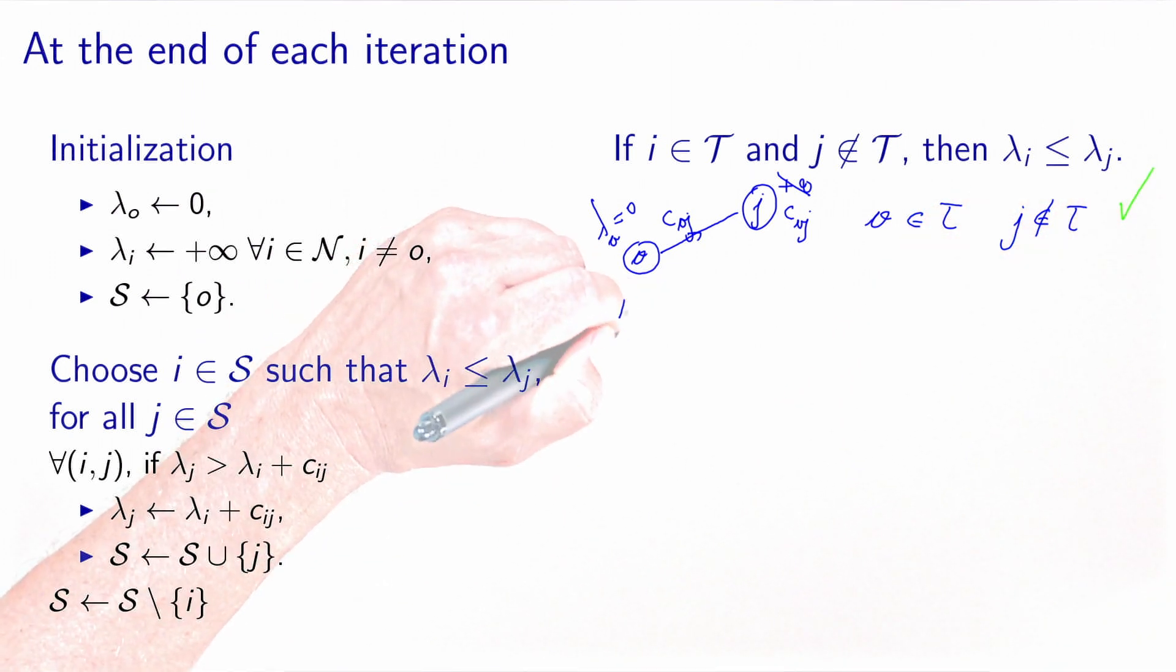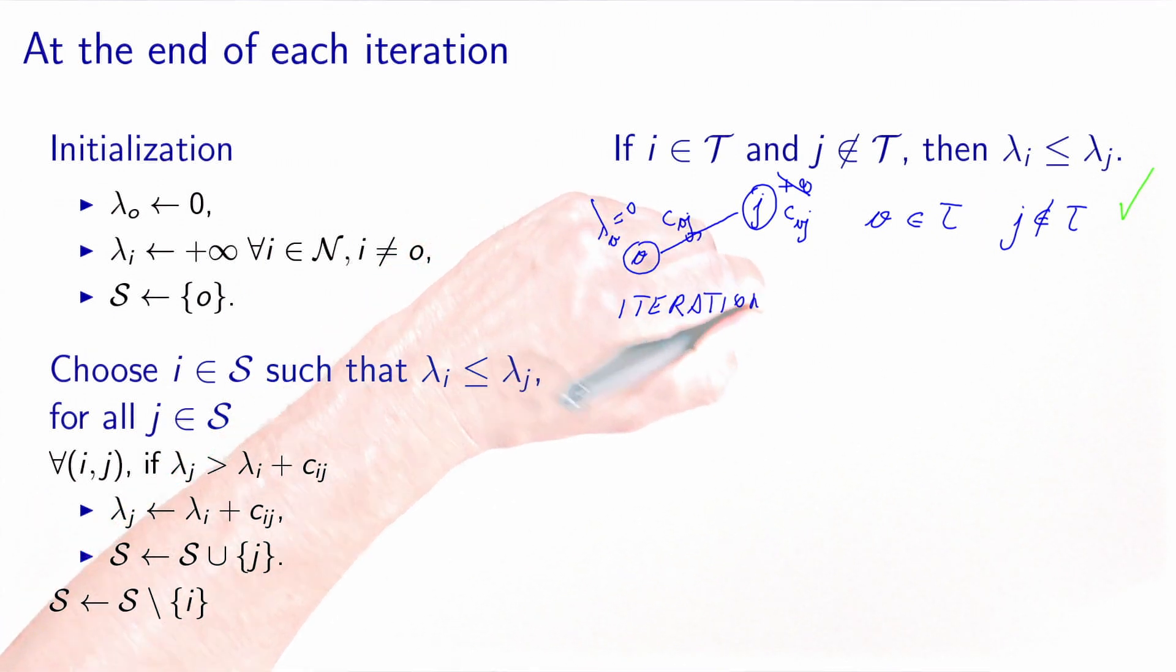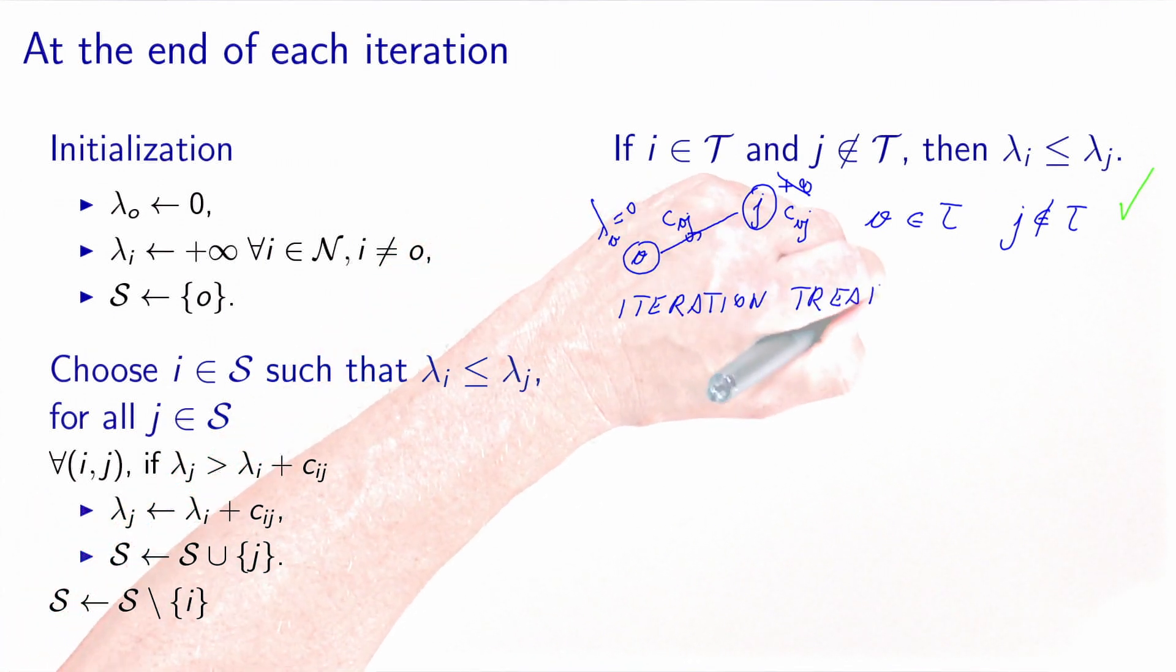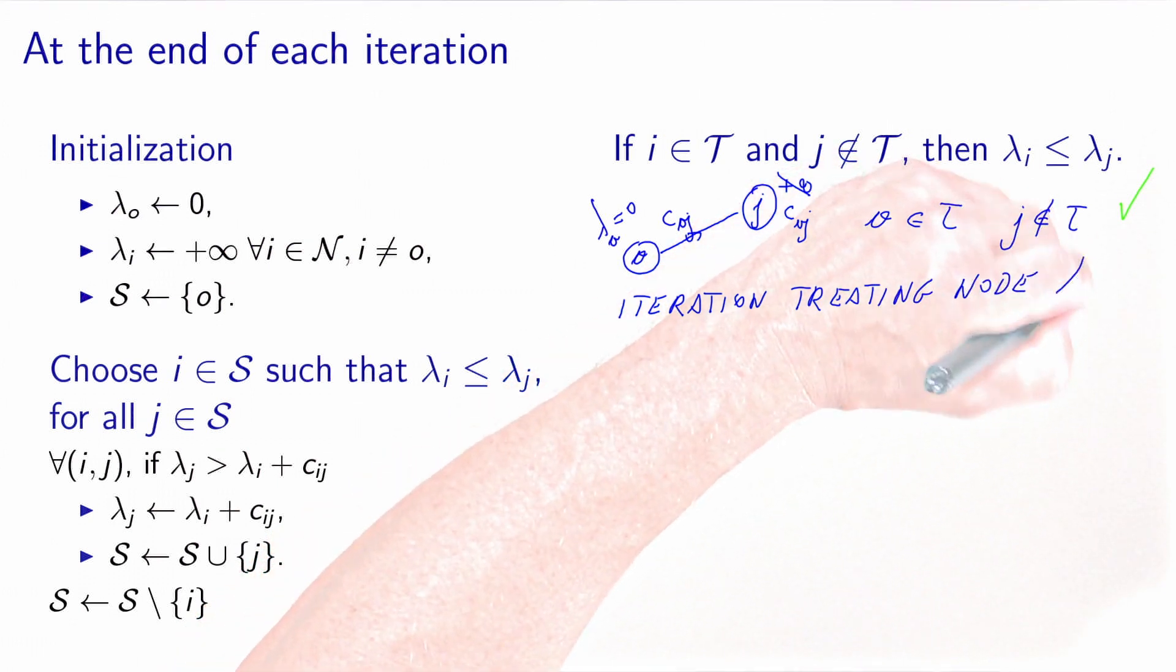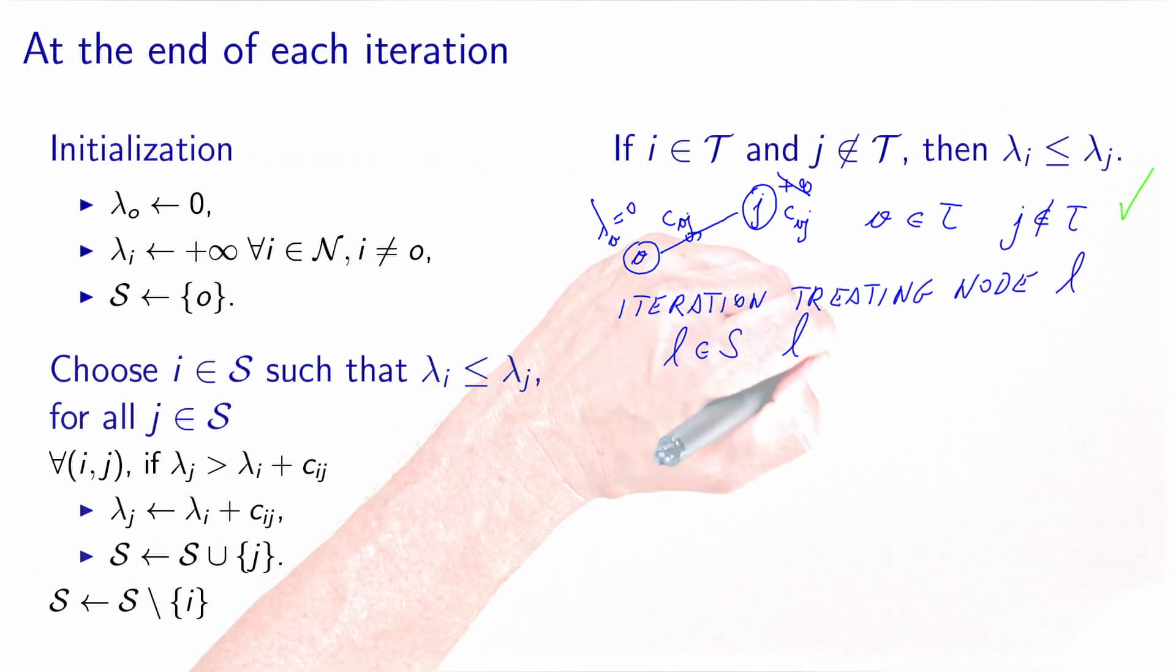So now let's consider an iteration treating node L. At the beginning of the iteration, L belongs to S, so L does not belong to T. And we assume that at the beginning of the iteration, by induction assumption, the property holds. So because L does not belong to T, its label is bigger than any label in T. Let's draw the set T, and we have the node L, which is here. So two things can happen.